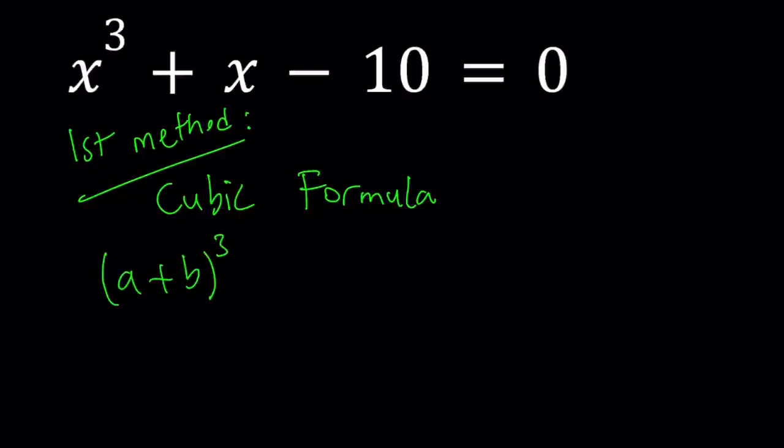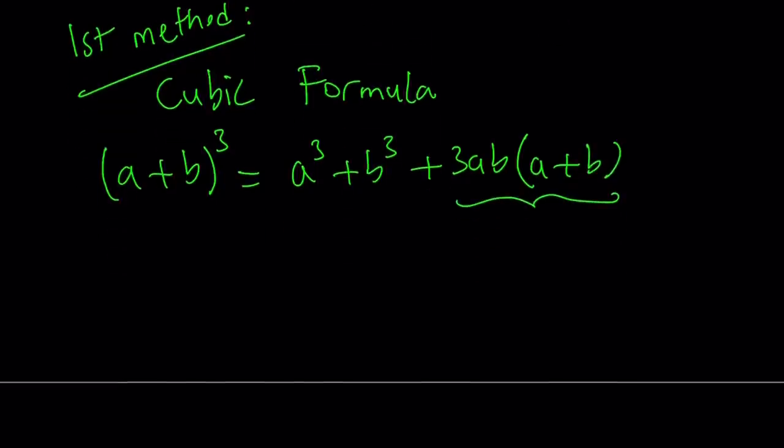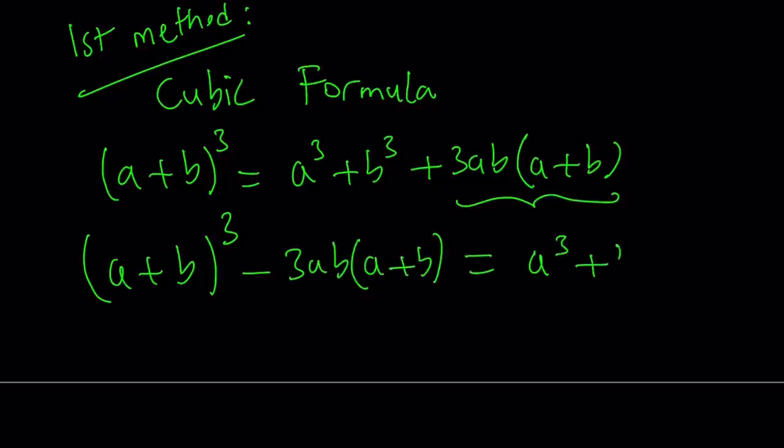We have (a+b)³, which can be written as a³ + b³ + 3ab multiplied by the quantity (a+b). And then I can go out and take this expression and subtract it from both sides. And I get the following: (a+b)³ - 3ab(a+b) = a³ + b³.